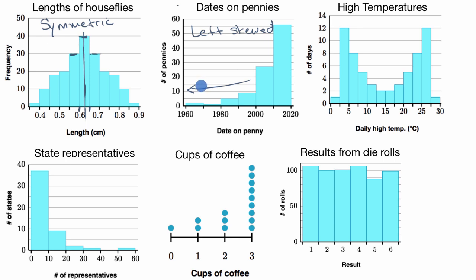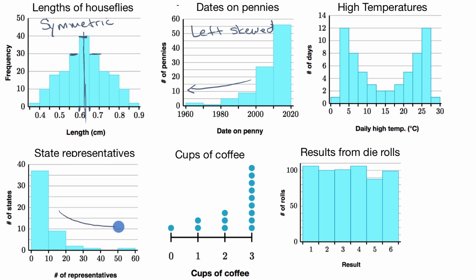The other side of a left skewed distribution would be a right skewed distribution, and that's exactly what we see here — a distribution of state representatives. Most states have between zero and 10 representatives, a little over 35 of them, while very few have more than 50. The bulk of the distribution is to the left, but there's a tail that skews it to the right, so this is known as a right skewed distribution.